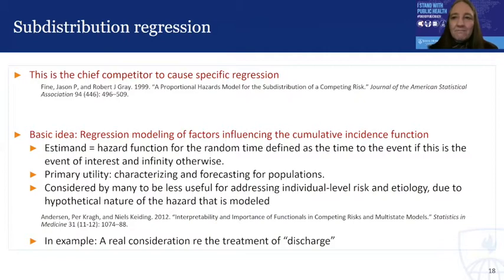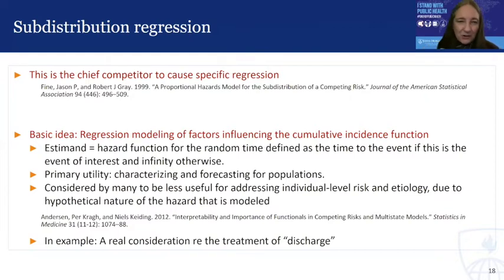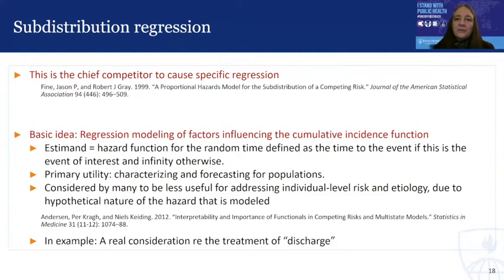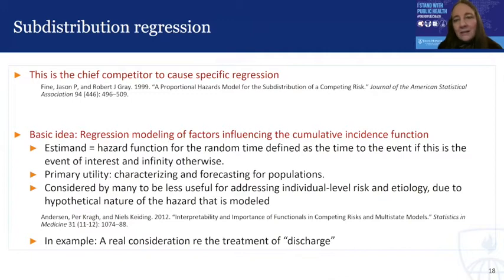It's totally designed for it. The hazard here is really interesting, so you have to pay attention closely. For sub-distribution regression, the hazard is the hazard function for a particular random time — the random time defined as the time to the event of interest, but infinity otherwise. So it's doing something completely different with the risk set than cause-specific regression is.